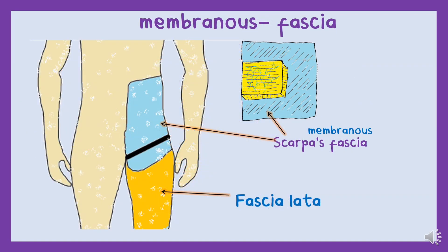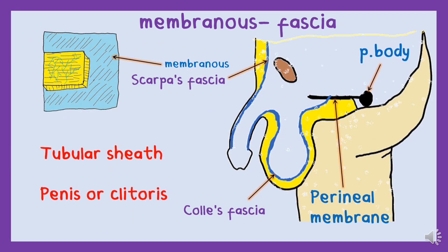The membranous layer continues with the superficial fascia of the back and the thorax. What happens to this fascia when it goes down towards the thigh and the penis region? This is really interesting. In the region of the thigh, it fuses with the fascia of the thigh — known as the fascia lata — the fusion of the two fascias occurring one finger-breadth below the inguinal ligament. Remember, we are talking about the membranous fascia going down and down, and it does not fuse with the pubic bone.